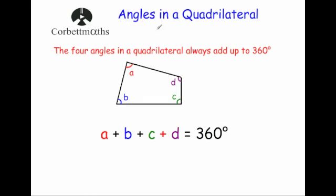In this video we're going to look at angles in a quadrilateral. The four angles in a quadrilateral, or four-sided shape, will always add together to give you 360 degrees. So if we've got a quadrilateral like this one with angles A, B, C and D, the four angles will add together to give you 360 degrees.